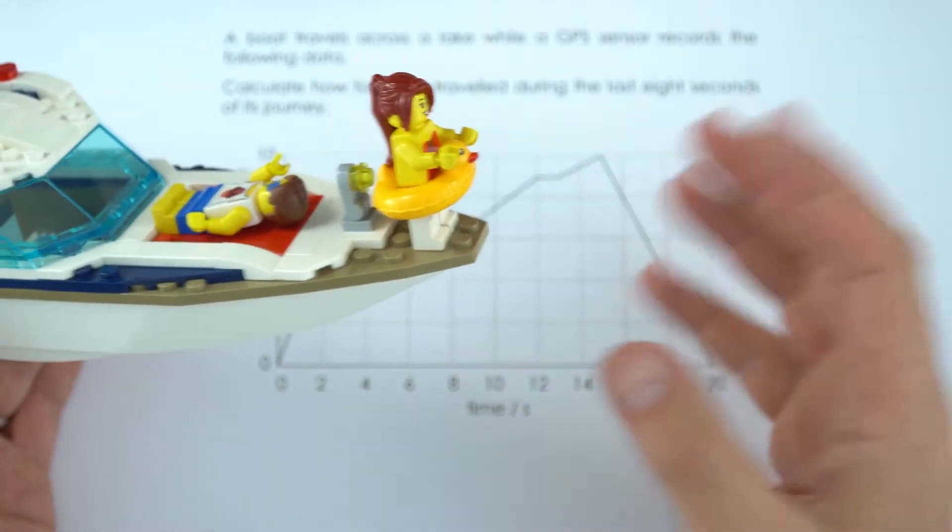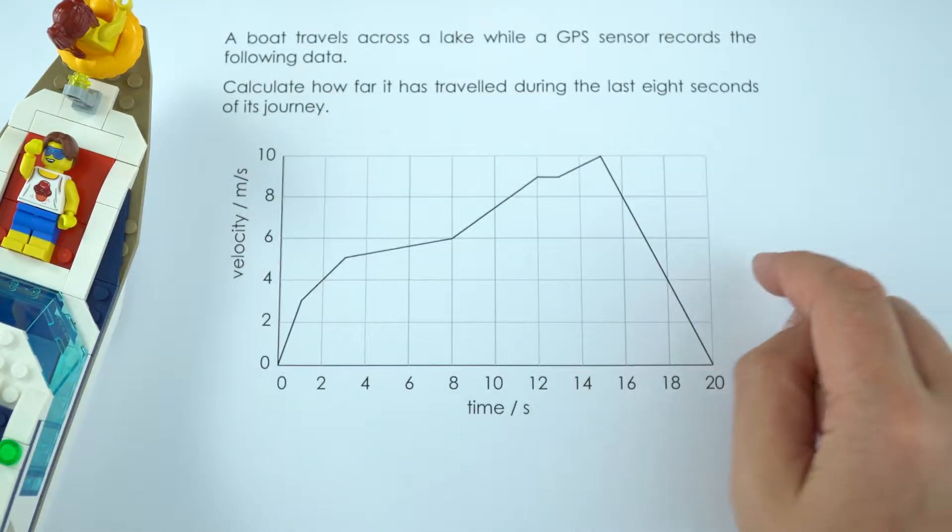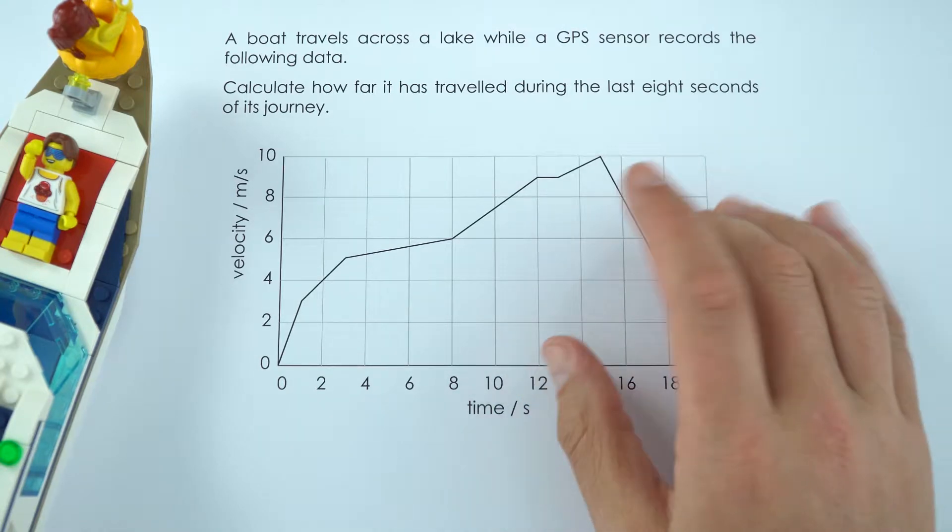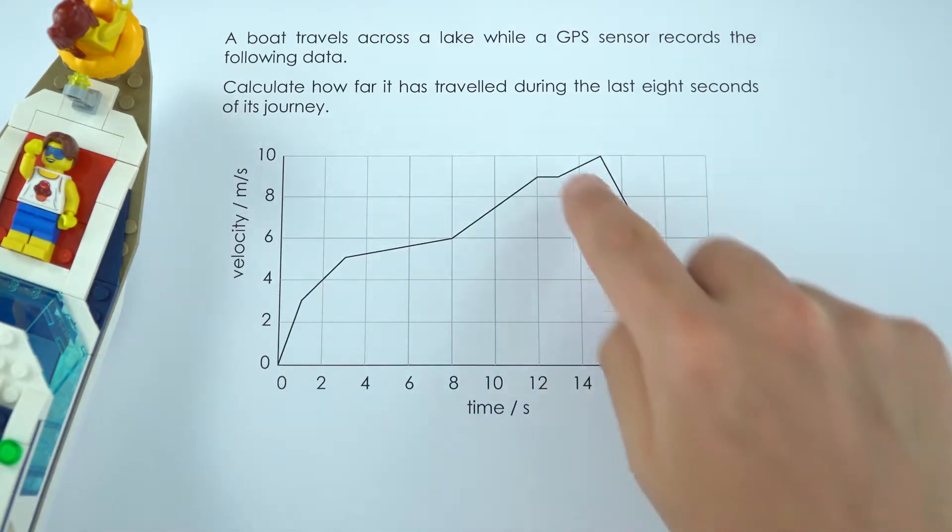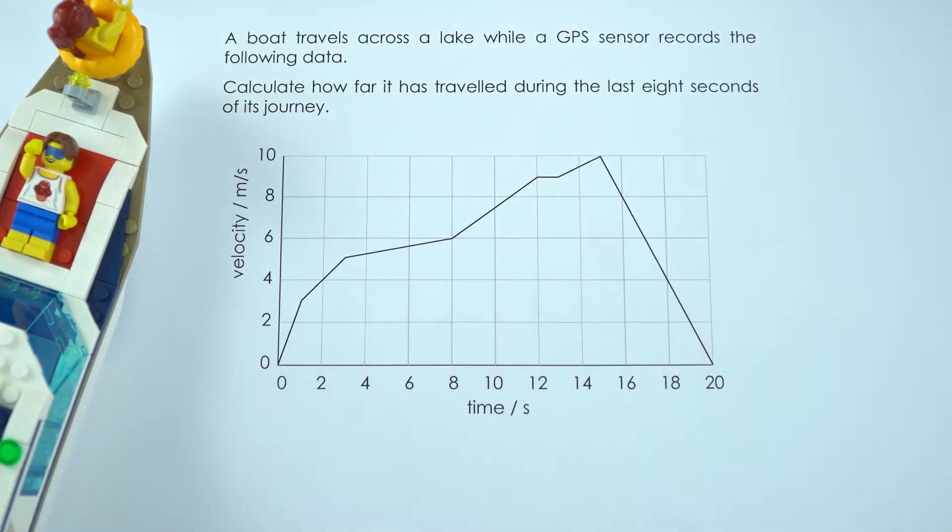In this question we're going to be working out how far this party boat has been traveling in the last eight seconds of its journey. We're going to do that by using the velocity time graph and looking at the area underneath the line for the last eight seconds.